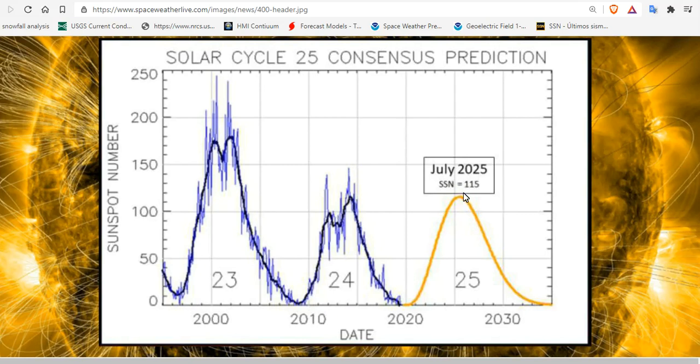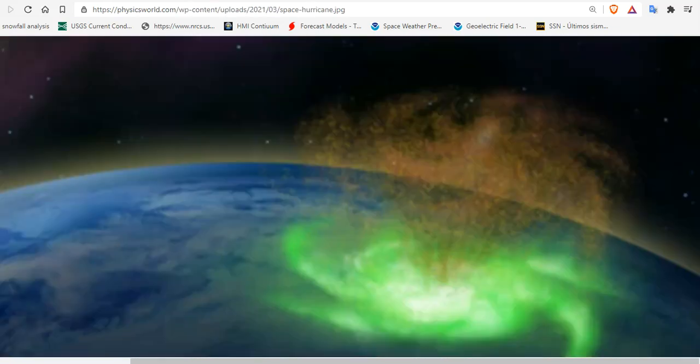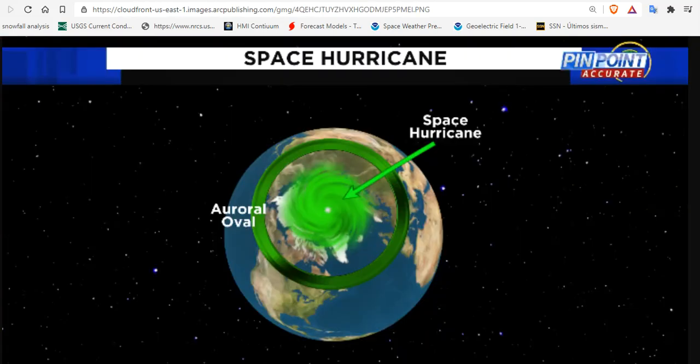Do we see another one of these? Will it be larger? What will the effects be? It's anyone's guess. What we know is what we've shared with you, and that's that a space hurricane over the North Pole has been observed on our planet in 2014.